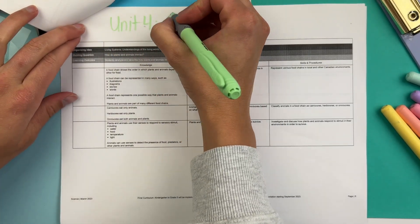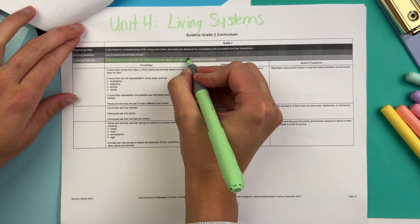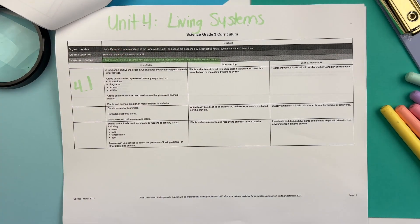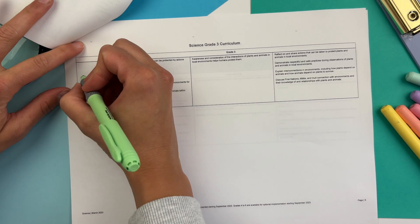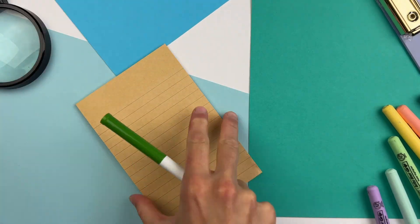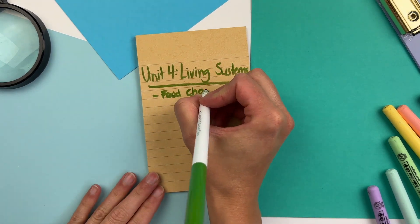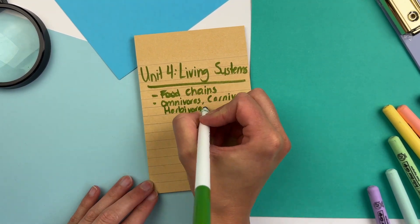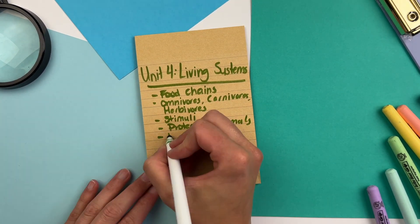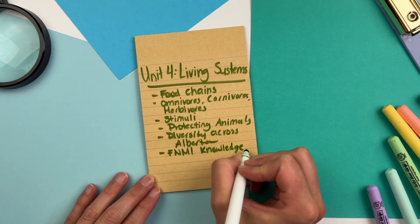Unit four in the new grade three science curriculum is about living systems. Here you're talking about food chains involving plants and animals, carnivores, herbivores, omnivores, sensory stimuli in animals, and ways to protect animals — respectfully interacting with them and being aware of animal crossings. You're also talking about diverse plants and animals found across Alberta. There's not a lot of outcomes in this unit, and the last section covers First Nations, Métis, and Inuit knowledge of plants and animals.